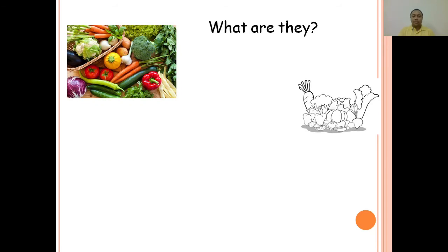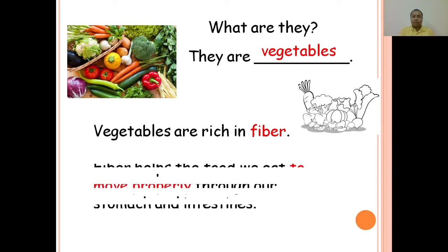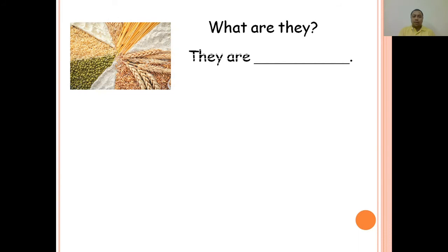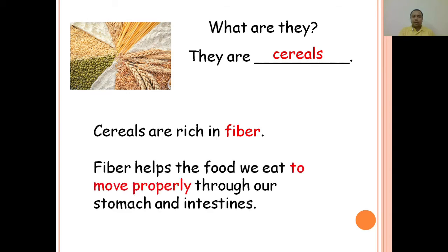What are they? They are vegetables. Vegetables are rich in fiber. Fiber helps the food we eat to move properly through our stomach and intestines. What are they? They are cereals. Cereals are rich in fiber. Fiber helps the food we eat to move properly through our stomach and intestines.